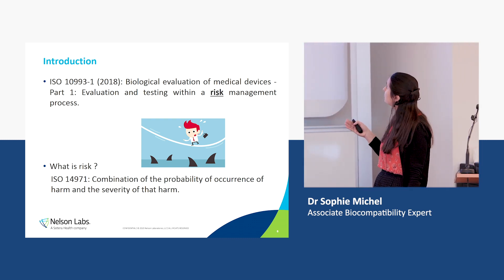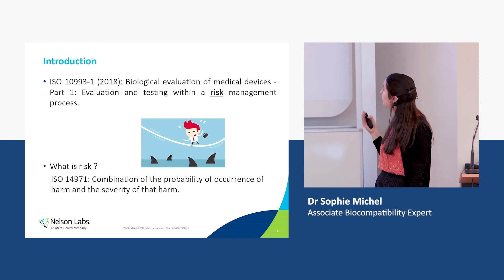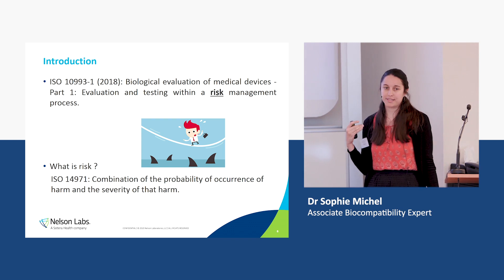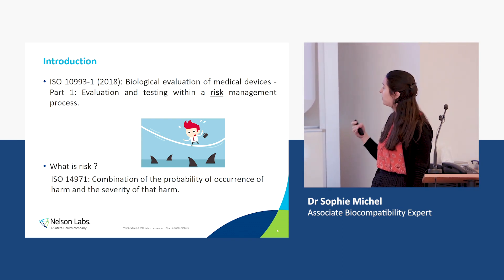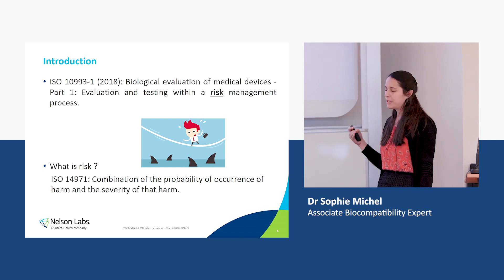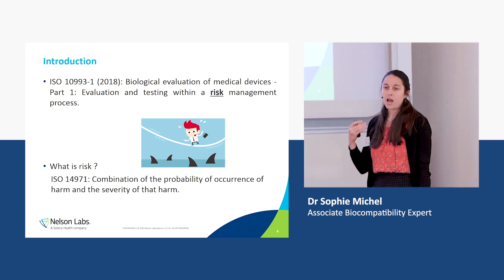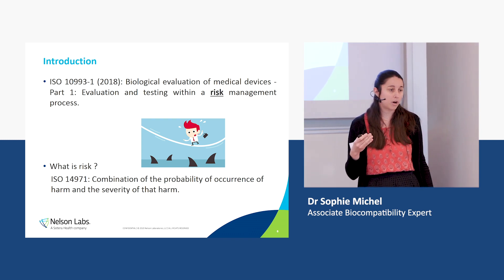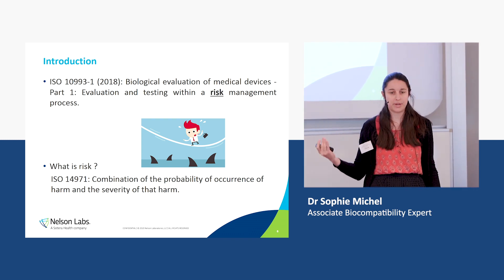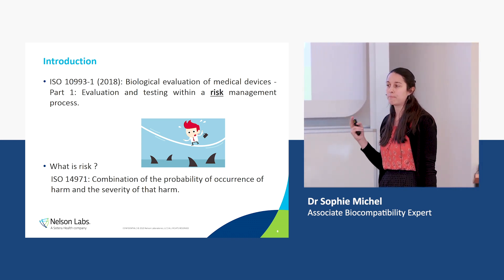The title is Part 1: Evaluation and Testing Within a Risk Management Process. And what is risk? It's actually the combination of the probability of occurrence of harm and the severity of that harm. In other words, how likely can a harm or a biological endpoint occur to the patient, and how severe will this biological endpoint be?